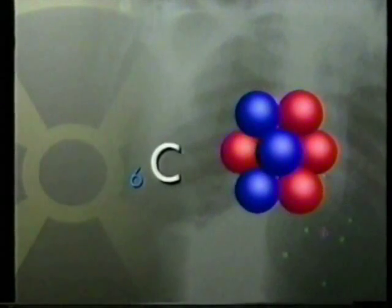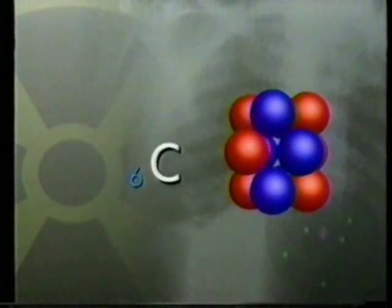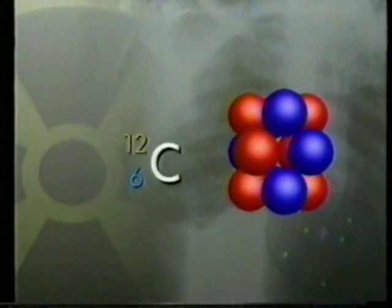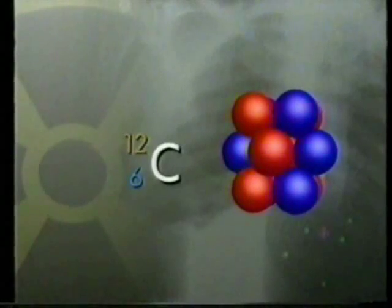Add together the number of protons and neutrons, and you have the mass number. Six plus six is twelve, so this is an atom of carbon-12.